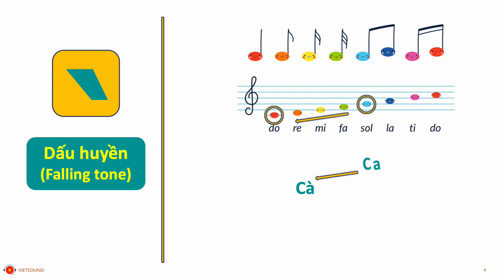Let's compare again. CÁ without tone, and CÁ with falling tone. To make the falling tone in Vietnamese, you have to lower your voice from the sol note to the đô note. Again: kā, kā, mā, mā.